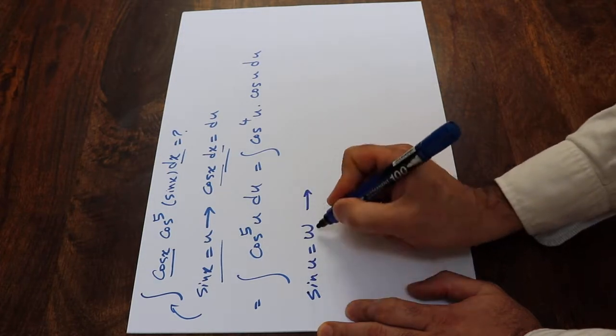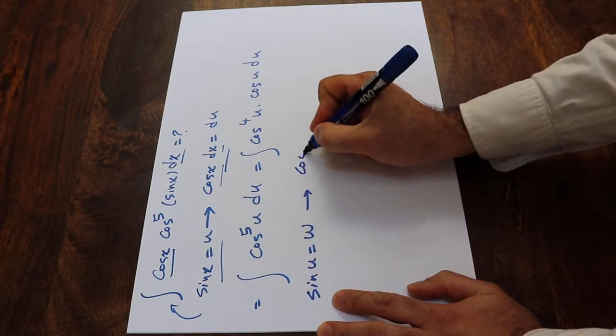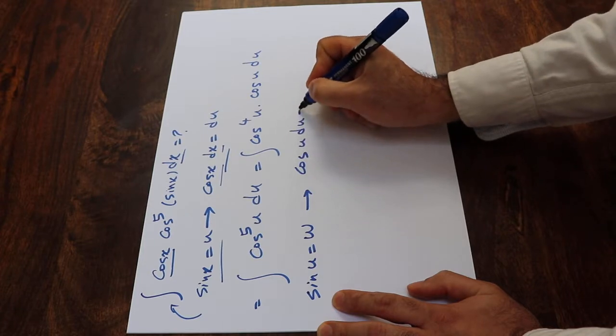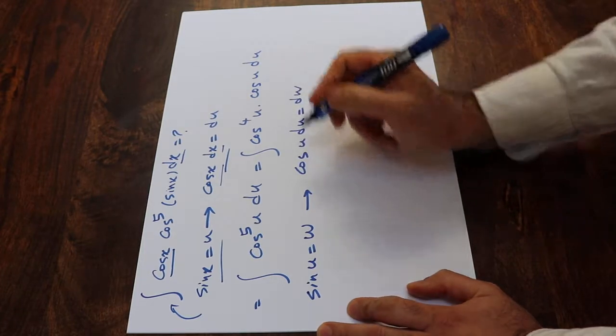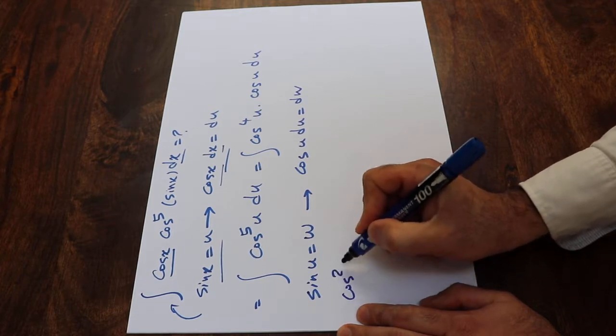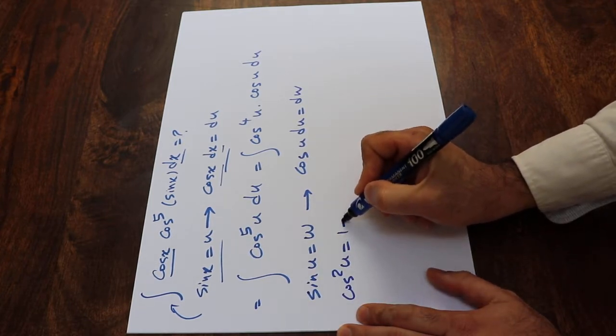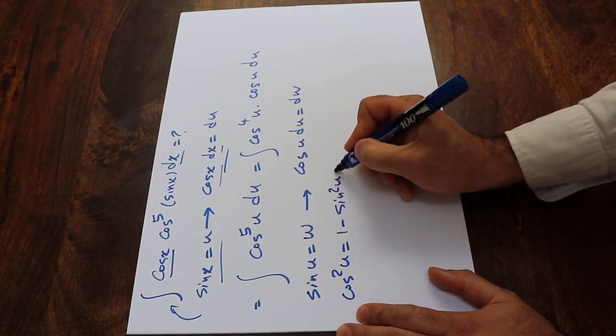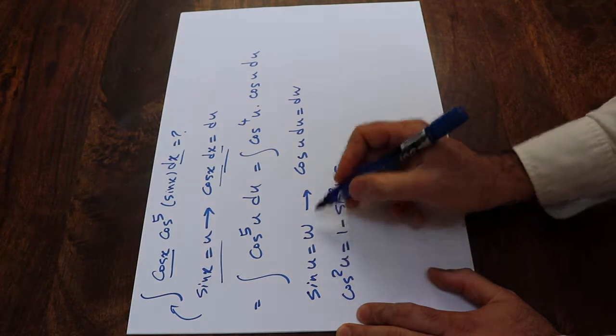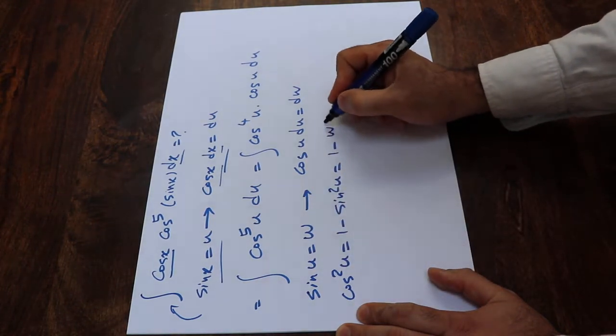If you take the derivative from each side of this equation, cos(u)du will be dw. Also from trigonometry, we know that cos²(u) equals 1 minus sin²(u). And since sin(u) equals w, that will be equal to 1 minus w².